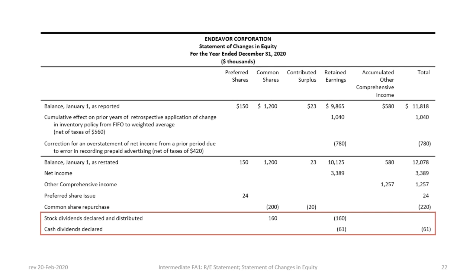Next we have stock dividends declared and distributed, and cash dividends for common and preferred shares of $61,000. These two line items are the same as under ASPE, and the journal entries were also shown earlier. Notice that the total column does not include the $160,000 stock dividend, because stock dividends represent a shift of capital from retained earnings to common shares: common shares increases by $160,000 while retained earnings decreases by $160,000, so there is no net impact on total equity. Only cash dividends — for both common and preferred shares — impact total equity.